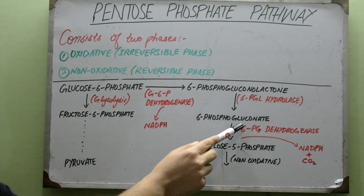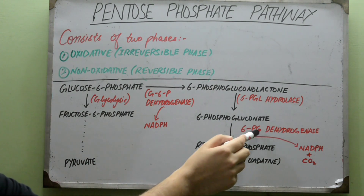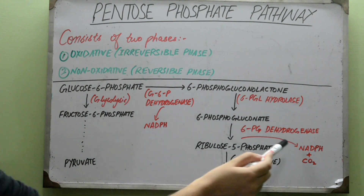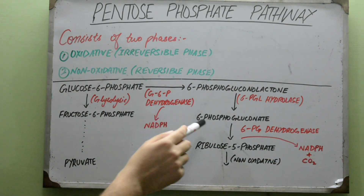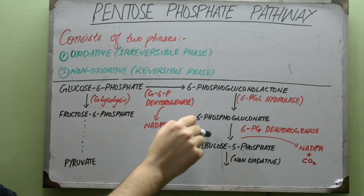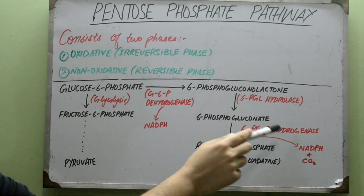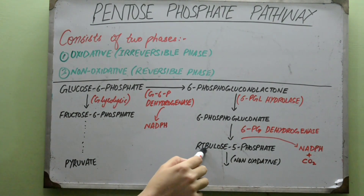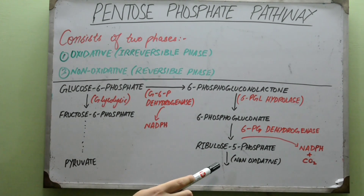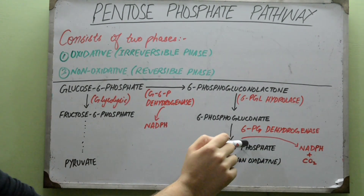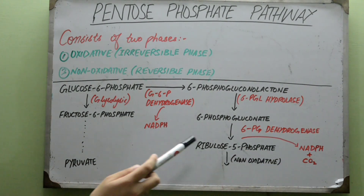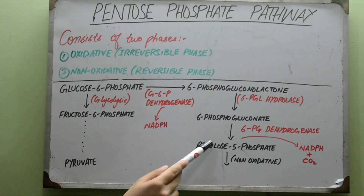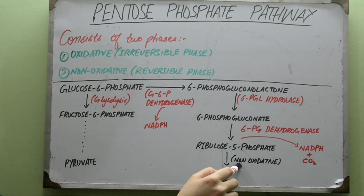This 6-phosphogluconate is acted upon by another enzyme, 6-phosphogluconate dehydrogenase — another dehydrogenase, which means another NADPH molecule is produced. In this reaction, a carbon dioxide molecule is also released. The 6-carbon compound is reduced to a 5-carbon compound. In this whole oxidative process, we get 2 NADPH molecules and a ribulose 5-phosphate intermediate, which will enter the non-oxidative phase.